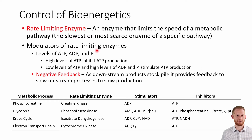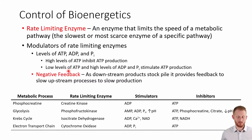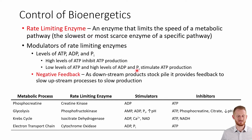Besides temperature and pH, common modulators include ATP, ADP — the broken-down version of ATP — and the inorganic phosphate released when ATP is broken down. Typically, when you have high levels of ATP, it's going to inhibit the bioenergetic pathways and the rate-limiting enzymes. When you have low amounts of ATP, meaning your body needs to produce it, that's going to speed up the pathways and these rate-limiting enzymes. Likewise, if you have a lot of the breakdown products — ADP and inorganic phosphate — that's also going to stimulate these enzymes.